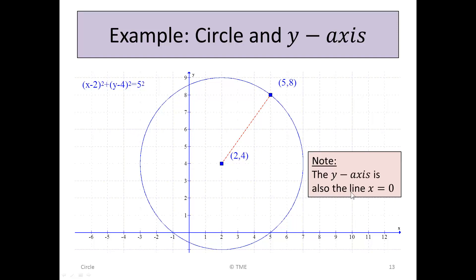Well, the y-axis is also the x = 0 line because the y-axis is just up and down. It never moves to the right or the left. So the first value is always 0. So the x value is 0. So we can use this equation, x = 0, as a function and see where it intersects the circle.